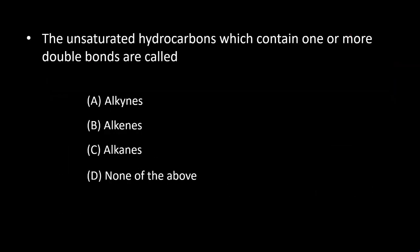Next question is about unsaturated hydrocarbons. Those which contain one or more double bonds are called alkenes, and those containing one or more triple bonds are called alkynes. So option B, alkenes, is the right answer.